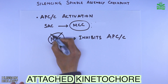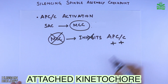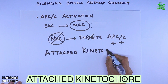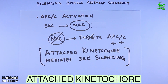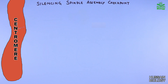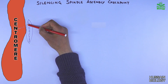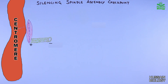But when we have an attached kinetochore, we need to deactivate the MCC. Its deactivation means APC will no longer be inhibited. So it is the attached kinetochore at the centromere that mediates the silencing of the spindle assembly checkpoint. Here in this diagram we have the centromere, and to it we have the kinetochore bound, and then to this kinetochore the microtubule gets attached.